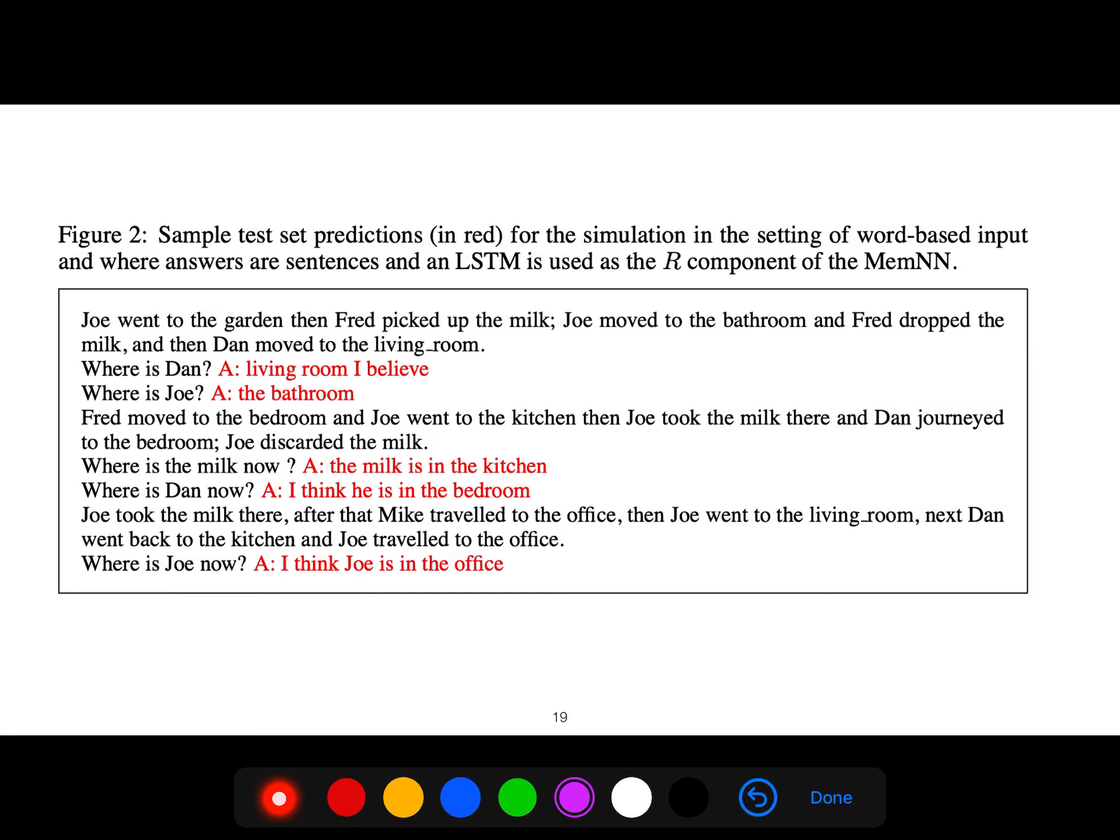This is a sample test set prediction. In red it means these are the answers that we predict. Living room, I believe the bathroom. Sometimes just a word, sometimes the answer is a sentence like the milk is in the kitchen.